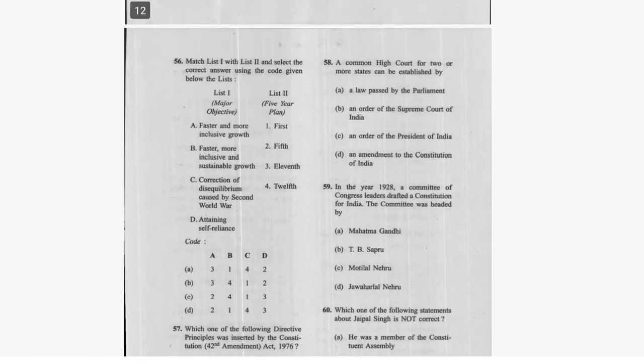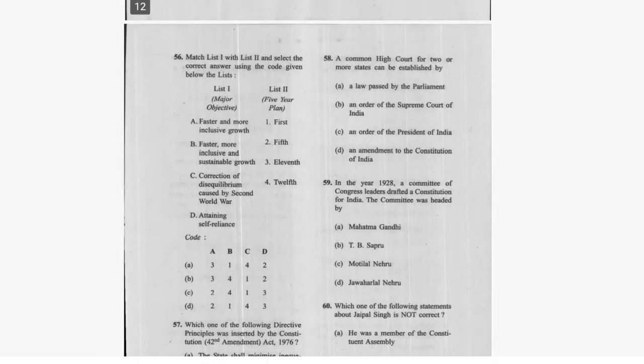Question 57: Which one of the following Directive Principles was inserted in the Constitution by the 42nd Amendment Act 1976? Option B — equal free legal aid — is correct. Question 58: A common High Court for two or more states can be established by a law passed by Parliament. Option A is correct.